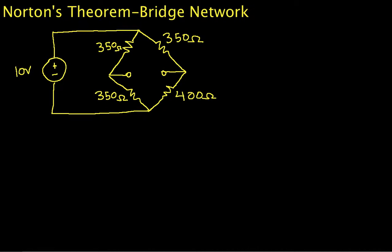Welcome to part two of the video example on finding the Norton's Theorem equivalent circuit for a bridge network. In part one, we found the Norton equivalent circuit by finding the open circuit voltage and the short circuit current, and then finding the Thevenin equivalent resistance, which is also the Norton equivalent resistance, as the ratio of the two.